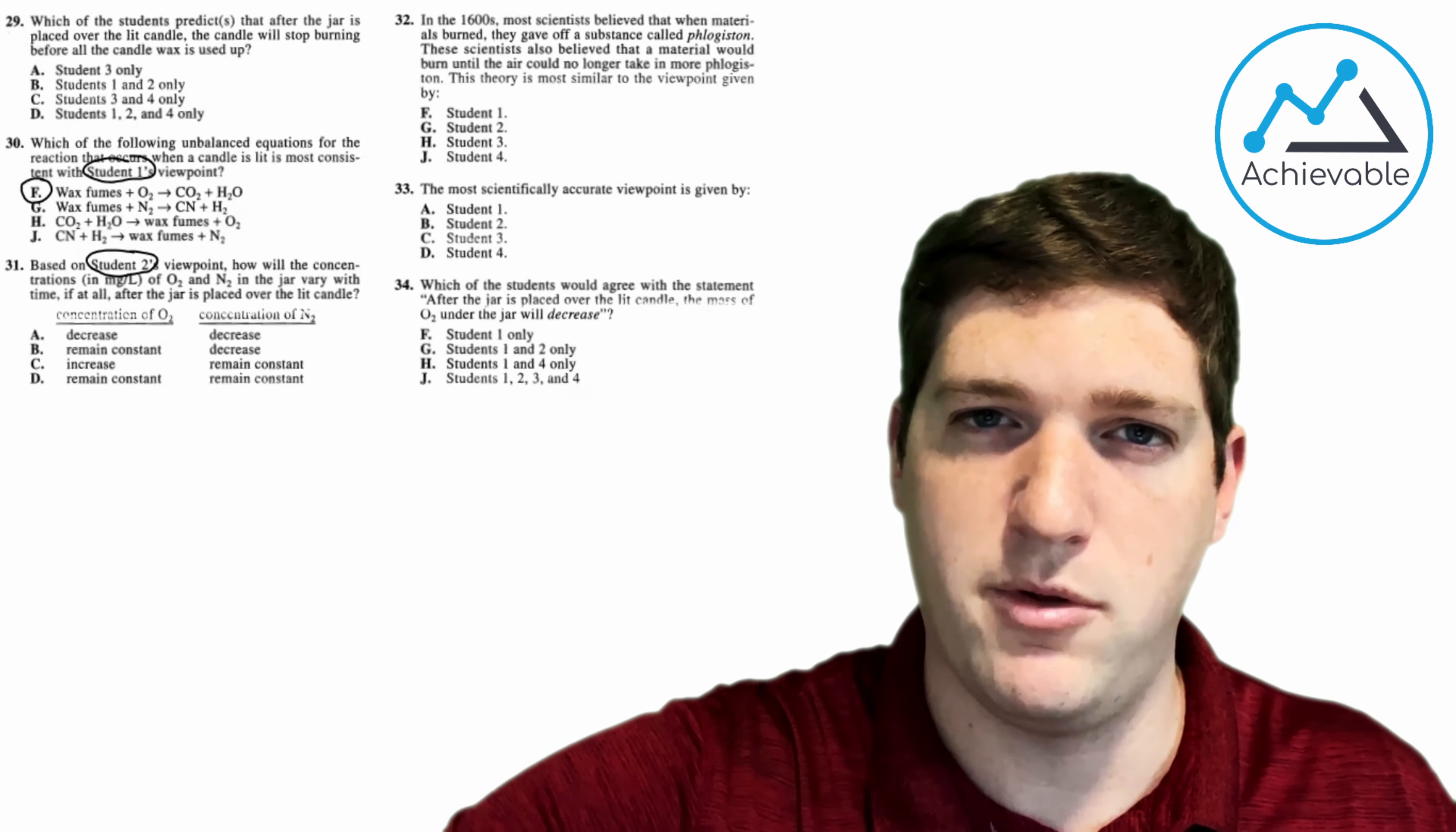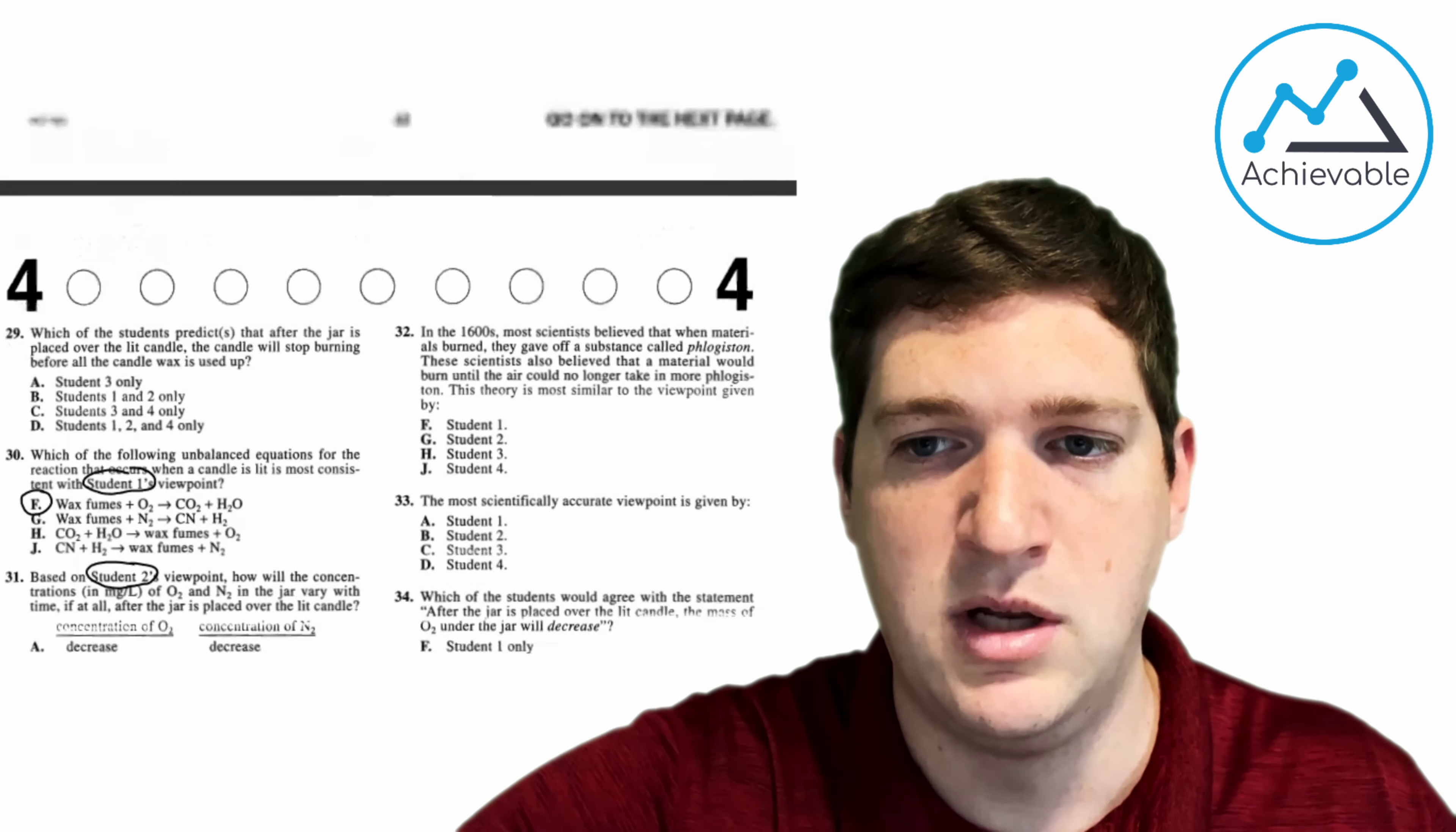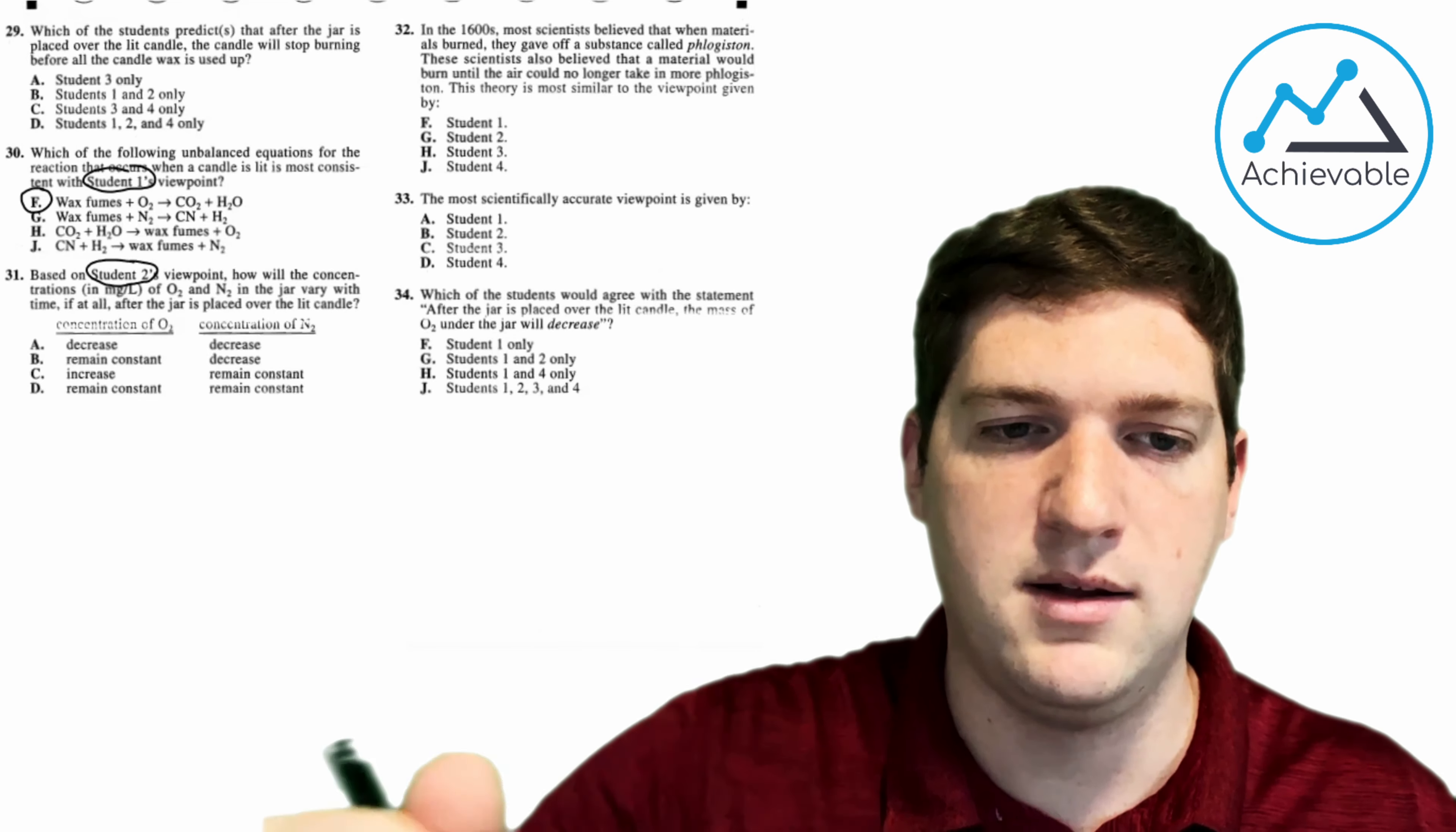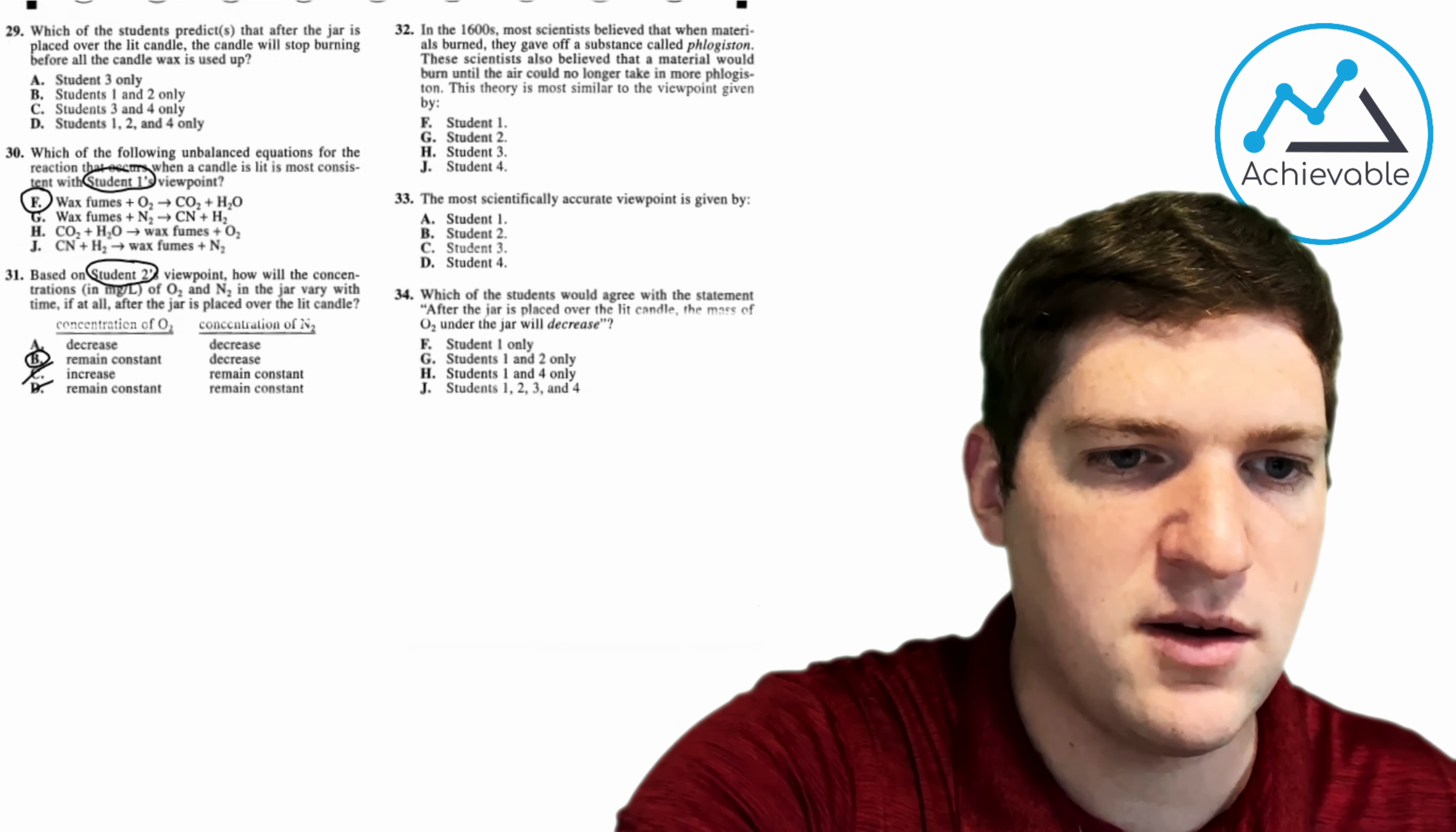Based on student 2's viewpoint, how will the concentrations of O2 and N2 in the jar vary with time, if at all, after the jar is placed over the lit candle? So now I'm going to go read student 2 and do his. Student 1 is correct, except that the fuel reacts with N2, not O2 in the air. So he said that the concentration of N2 will be used up quickly. So we would expect N2 to decrease, so I can eliminate C and D. And he didn't say that O2 really did anything. So it should just remain constant, and our answer choice here should be B. So there you go.